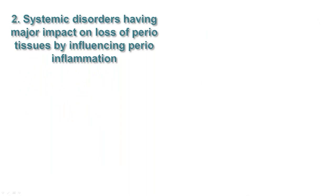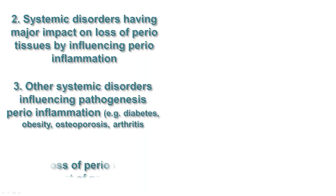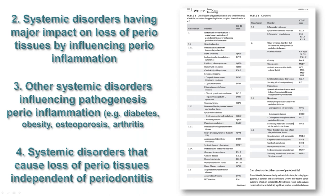From work group three, there are systemic disorders that have a major impact on the periodontal tissues by influencing periodontal inflammation — where you've already got a periodontal inflammatory condition but the systemic disorder impacts on it. There are also other systemic disorders influencing the pathogenesis of periodontal inflammation, such as obesity, metabolic syndrome, diabetes, and osteoporosis. I'm not going to talk about those, but I will discuss the systemic disorders that cause loss of periodontal tissues independently of periodontitis.